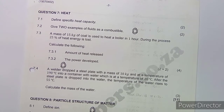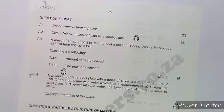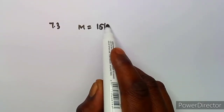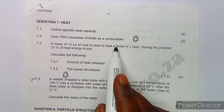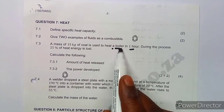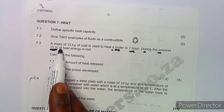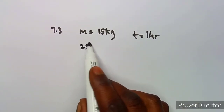Let's move on to 7.3. A mass of 15 kg of coal is used to heat a boiler in one hour. During the process, 25 percent of the heat is lost. So we have a mass of coal of 15 kg. This coal is heating the boiler, meaning the time given for the process is one hour. During the process, 25 percent of the heat was lost.